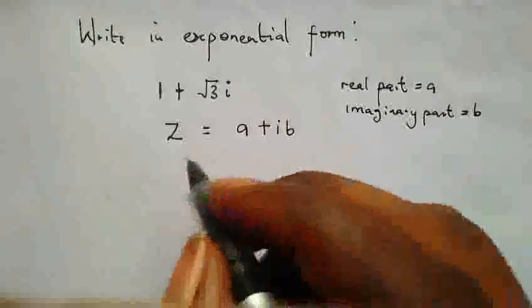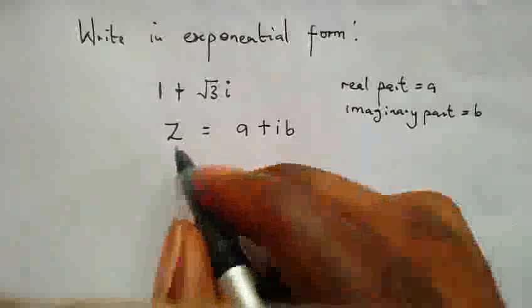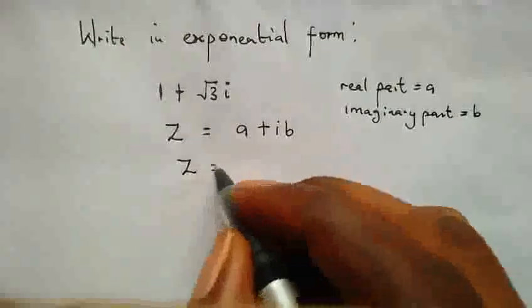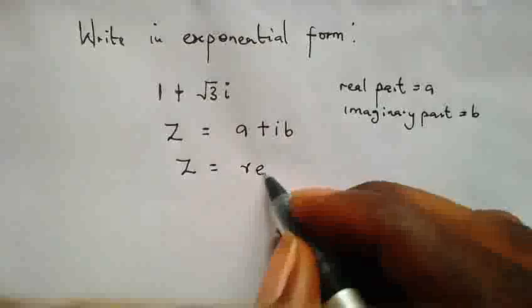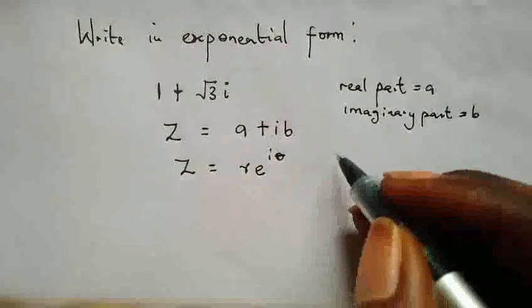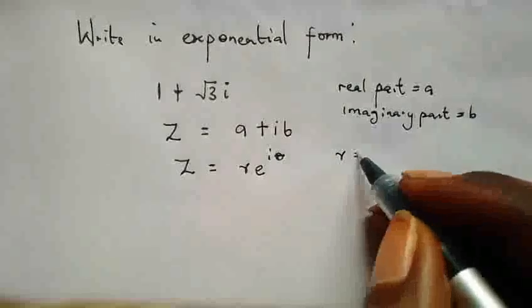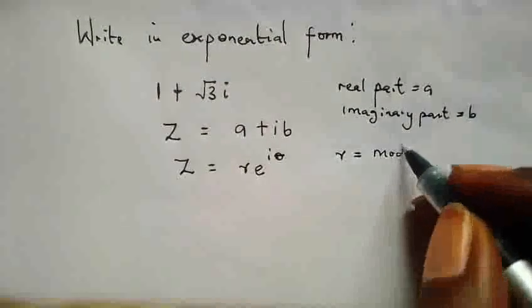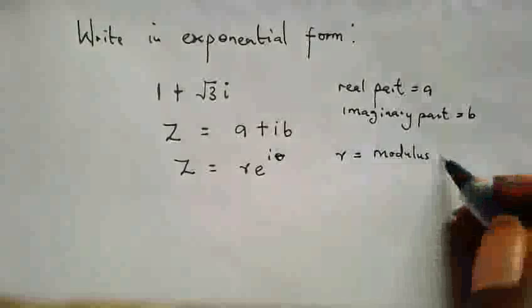So now this complex number Z can also be written in exponential form as R E raised to the I theta. Here our R is equal to modulus of Z.